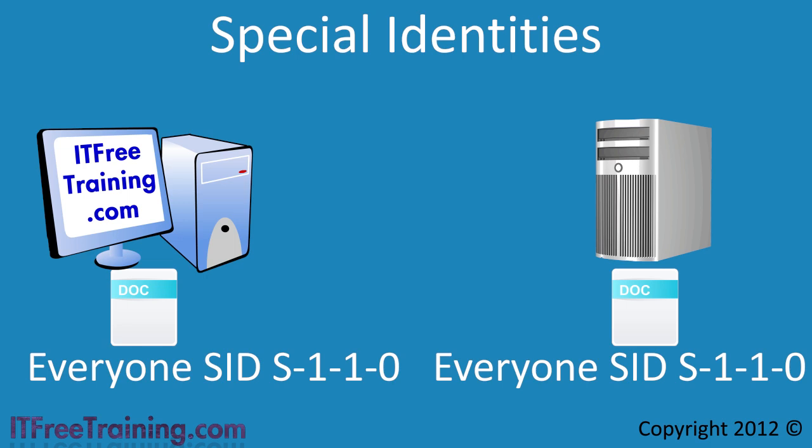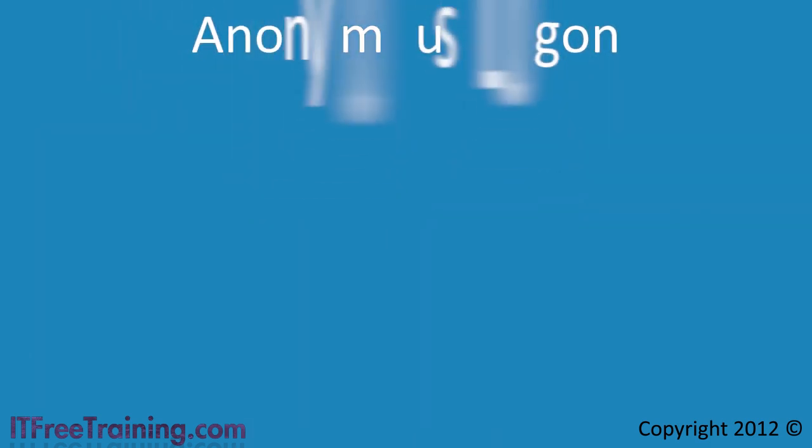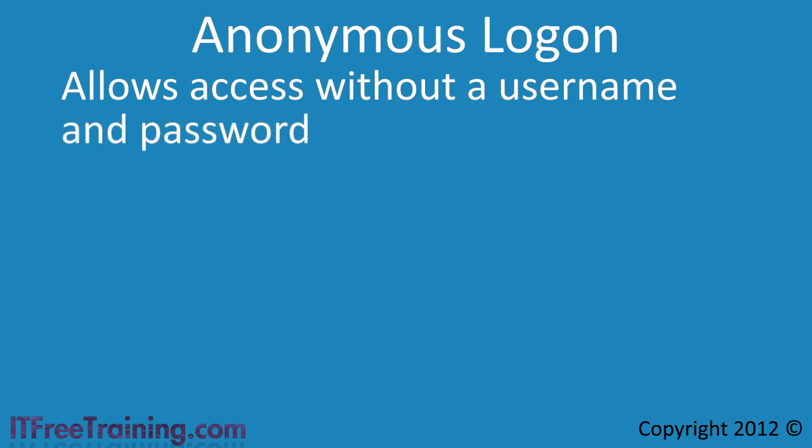Now that we understand the basics of how special identities work, let's have a look at the default special identities included in Windows. The first one is anonymous logon, which allows a user to access a resource without a username and password. For example, if you had some files on a server that you wanted to make public, that is available to everyone, you would assign permissions to the resource as anonymous logon.